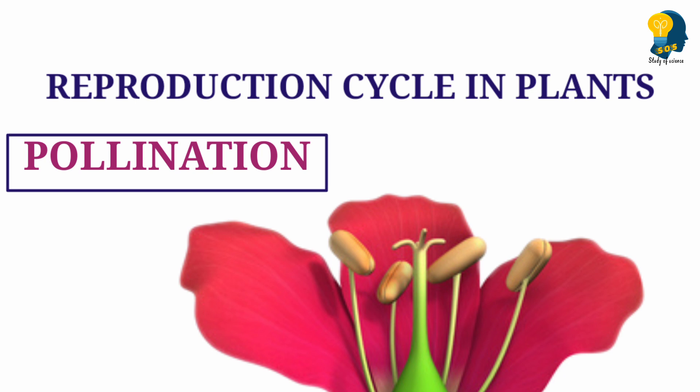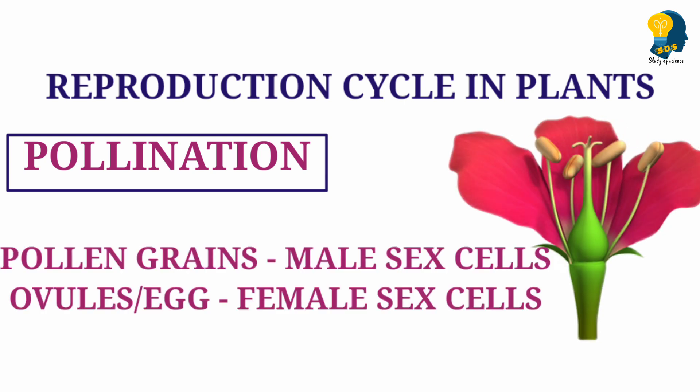For sexual reproduction to happen, the pollen grains should meet the egg. The pollen grains are the male gametes — that means they are the male sex cells. The ovules, which are also called eggs, are the female gametes — they are the female sex cells. So if fusion between the male and female has to take place, then the pollen has to reach the stigma.